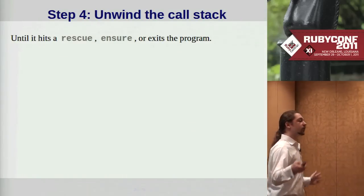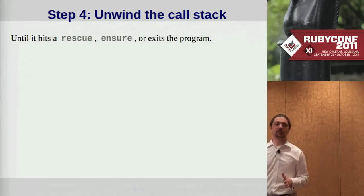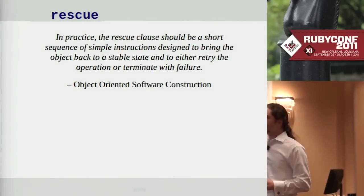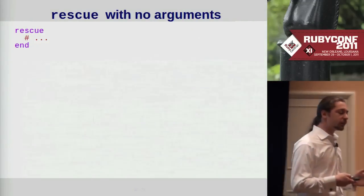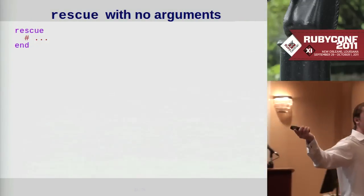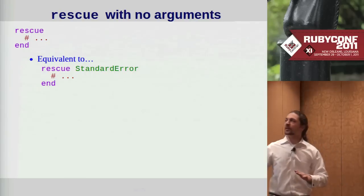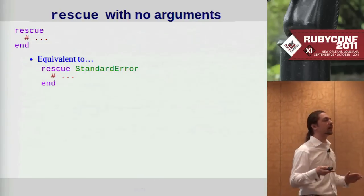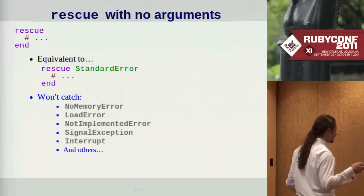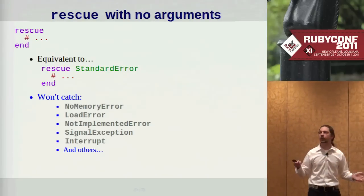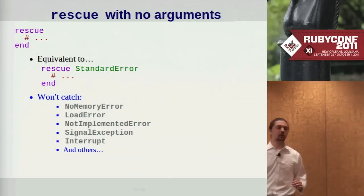Step four in raising an exception is to start unwinding the call stack. Once we've raised an exception, we handle it with rescue. Rescue with no arguments will capture anything descended from StandardError — not every exception. This is a common point of beginner confusion, because things like NoMemoryError, LoadError, NotImplementedError, and others will go flying right past a bare rescue.